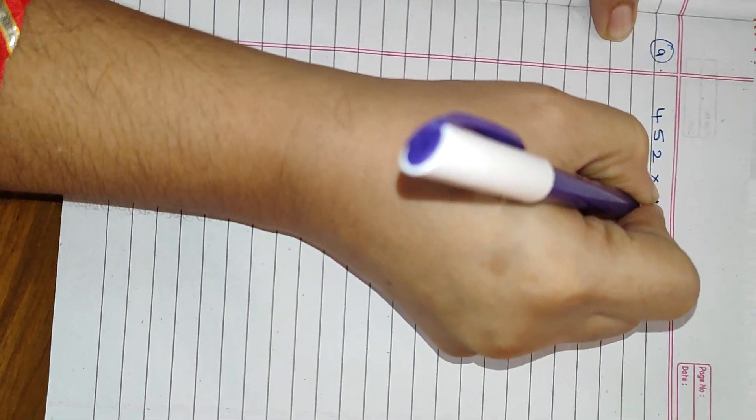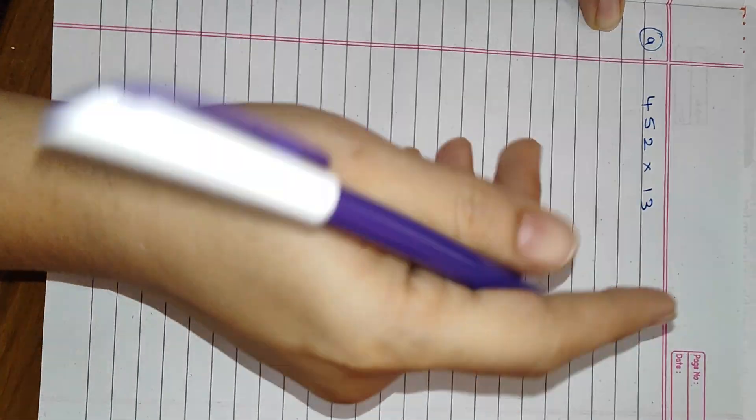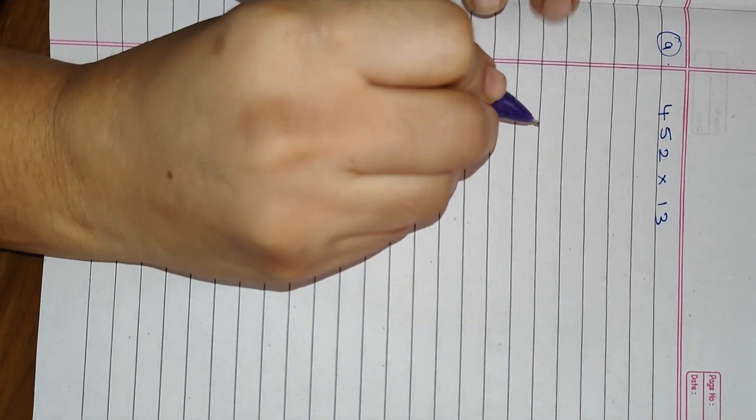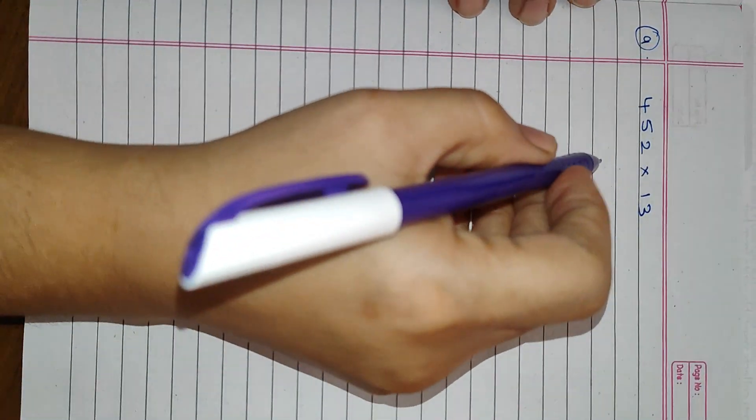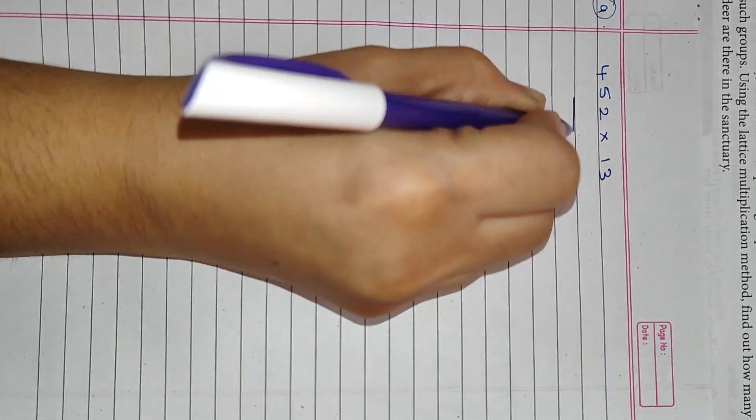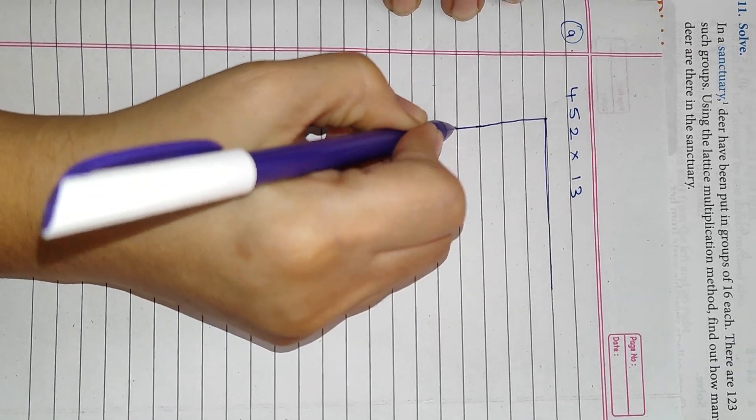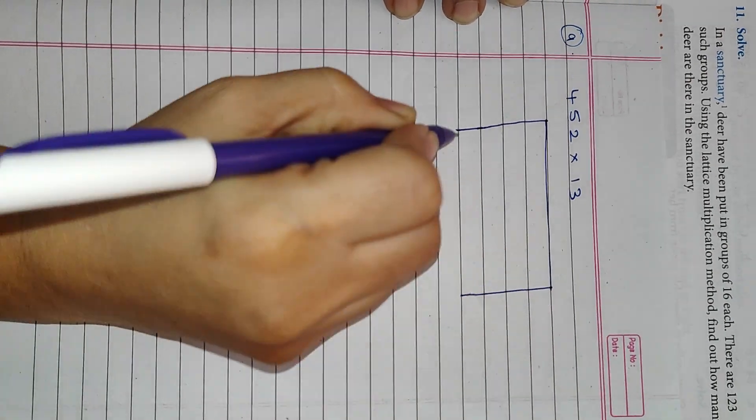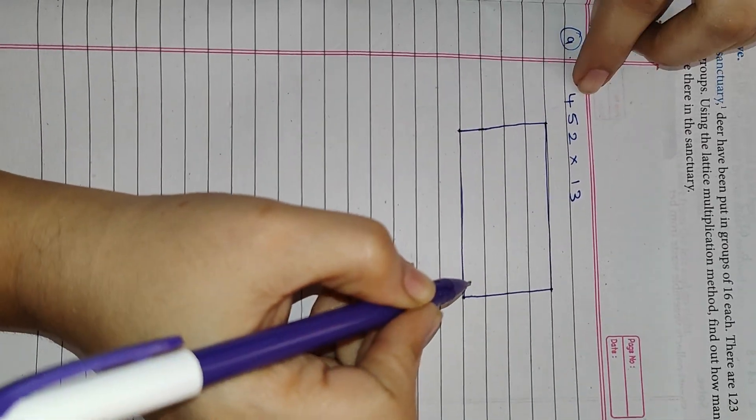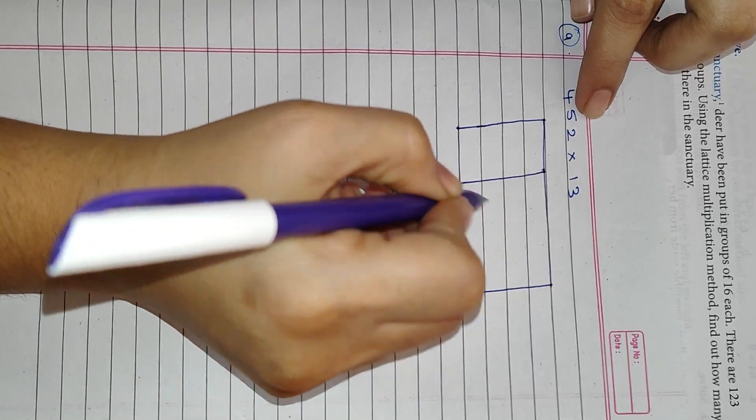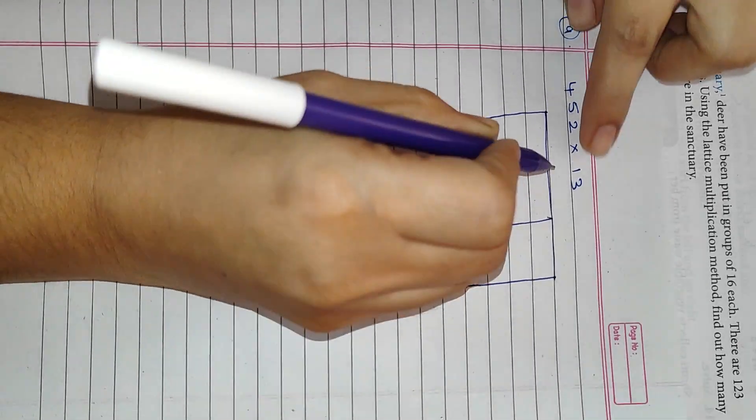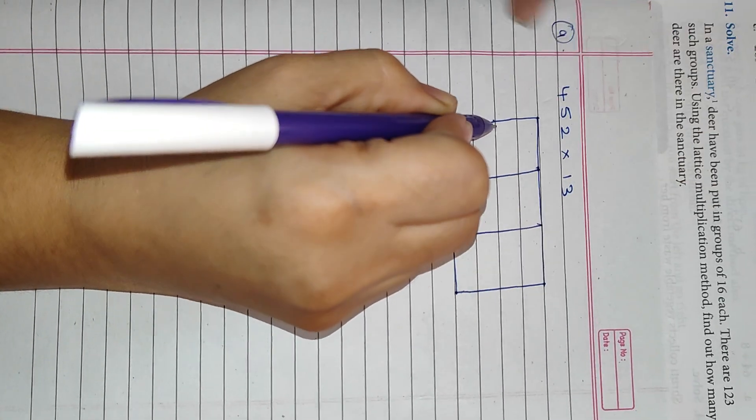First thing in lattice multiplication is by column method. So let me follow that. First, I am going to draw a box. Because it is a three-digit number, I will have to have three columns.